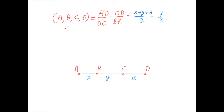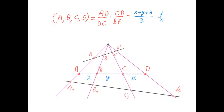So we have this equality here, and if we denote this distance by x, this distance by y, and this distance by z, then the cross ratio is also given here. It is x plus y plus z divided by z times y divided by x.